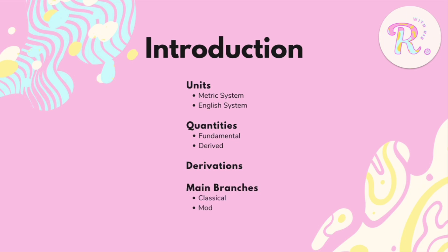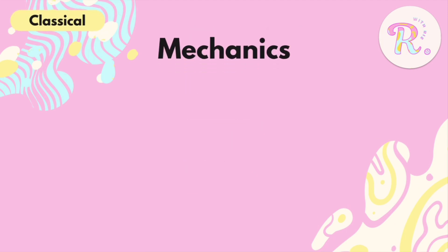In physics there are a lot of topics but we have two main branches: classical and modern physics. We'll be discussing all topics under both branches. Starting with classical physics, under this we have mechanics, which includes statics — the branch of physics that deals with forces acting on objects in equilibrium, meaning they are either at rest or moving without acceleration. Under statics we find the conditions for equilibrium as well as torque.